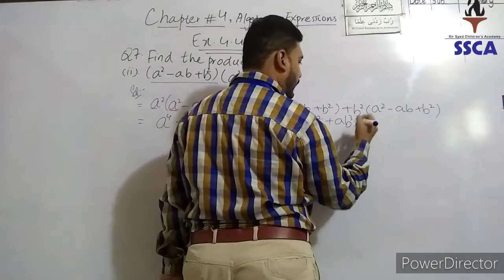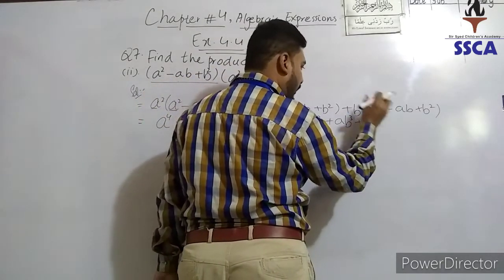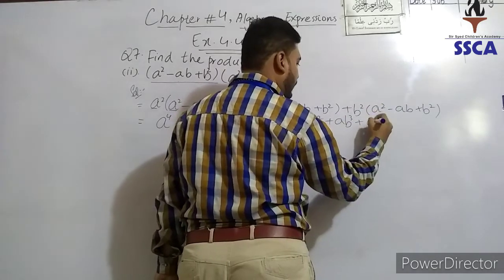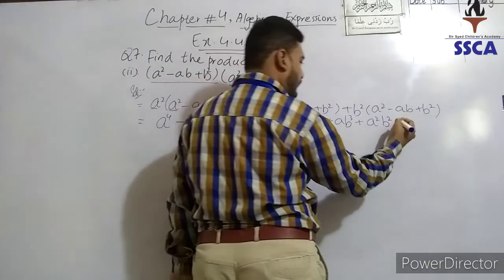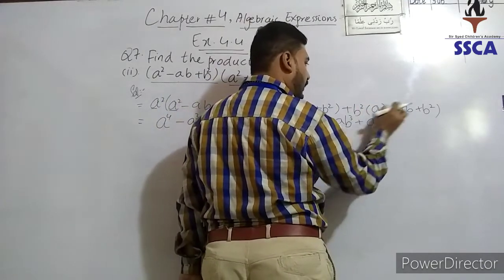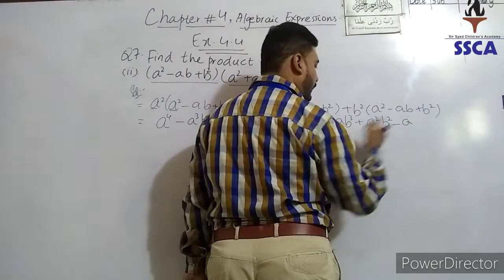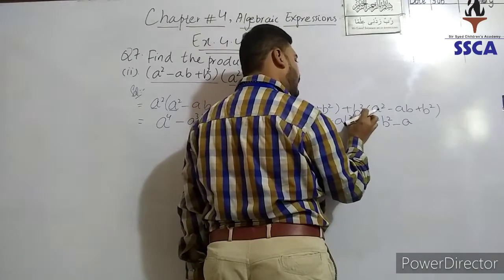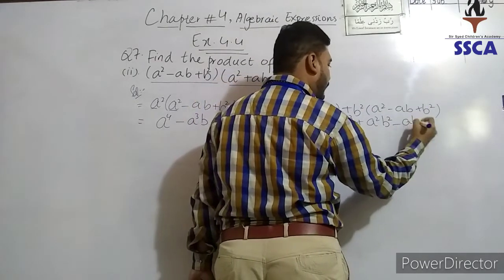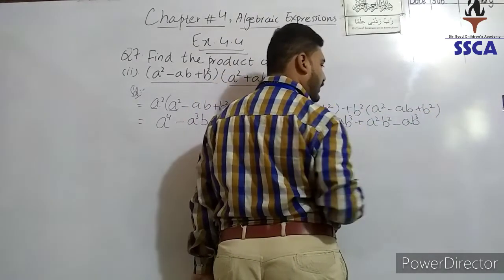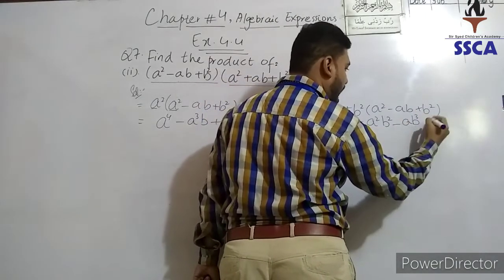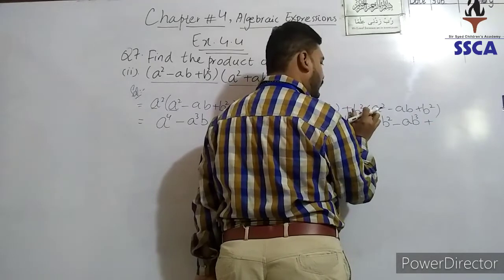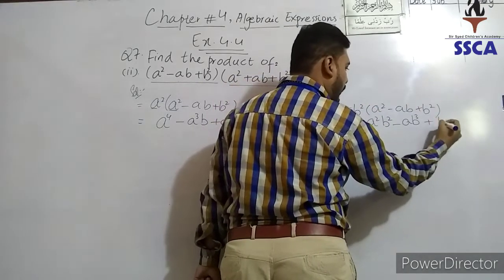This way we go: b square with a square multiply gives a squared b squared. Plus minus gives minus. B square with ab multiply gives ab cubed. Plus b square with b square multiply gives b to the power 4.